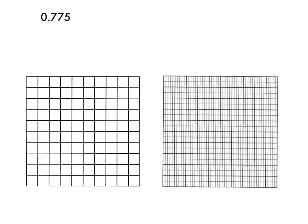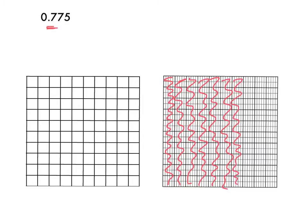This decimal is seven-hundred-seventy-five-thousandths. I'm going to start by shading it in on a thousandths grid. First, I'm going to think about it place by place. I see that there's a seven in the tenths place, which means I'm going to shade in seven-tenths — one, two, three, four, five, six, seven.